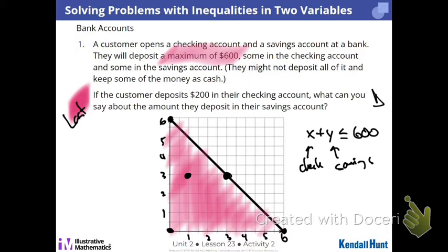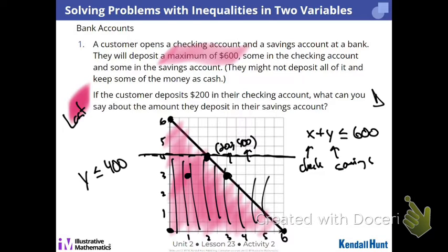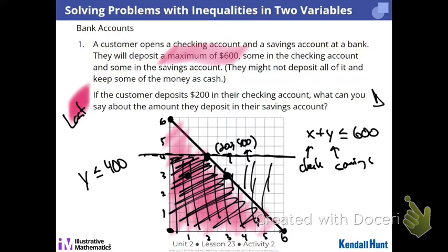Everybody good on that? Now let's answer the question. If there's 200 in checking, what do we know about savings? Less than or equal to $400. So you go right here — 200 in checking, 400 in savings puts you right on the line. If I had 400 in savings or less, that's one condition. Look where these two things overlap — this is where it meets both conditions: $400 or less, as well as $600 or less. Where it overlaps is our answer.